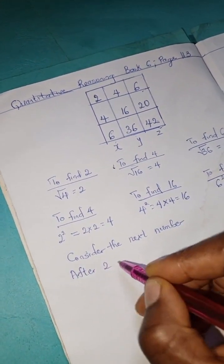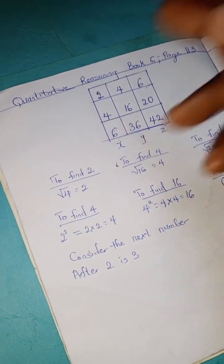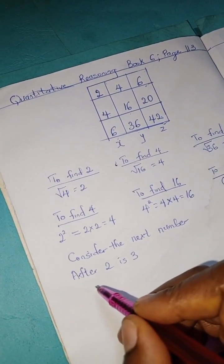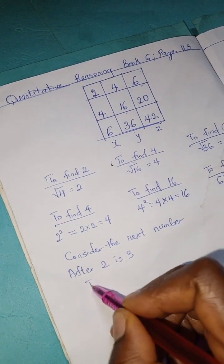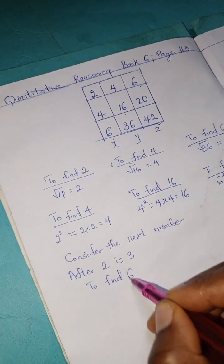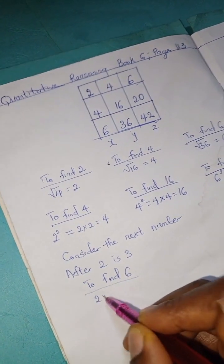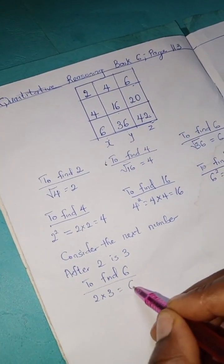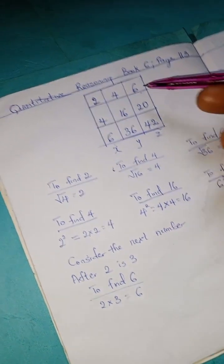So after 2 is 3, we're going to multiply 2 and 3. So to find 6, we have 2 times 3 is 6.